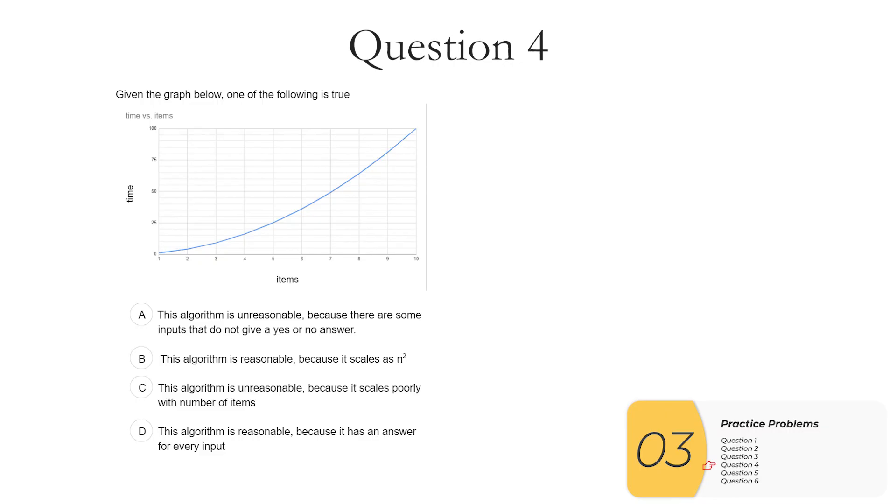Question four: given the graph below, one of the following is true. Now I'm going to say right here, this is an example of the AP board doesn't actually tell you what the scaling is, and you have to figure it out from the data. So A, this algorithm is unreasonable because there are some inputs that do not give a yes or no answer. No, this is related to decidability. Reasonableness has to do with scaling. B, this algorithm is reasonable because it scales as n squared. So here's where I have to figure it out myself. If x is 5 and y is 25 and x is 10, then y is 100. That does scale as n squared, which matches this answer. So B is true. And there's your answer. C, this algorithm is unreasonable because it scales poorly. Well, we already know it scales as n squared, and that's allowed under the reasonableness criteria, but this is not the answer. And D, this algorithm is reasonable because it has an answer for every input. No, that's decidable. So that's not what we're looking for here. The answer is B.